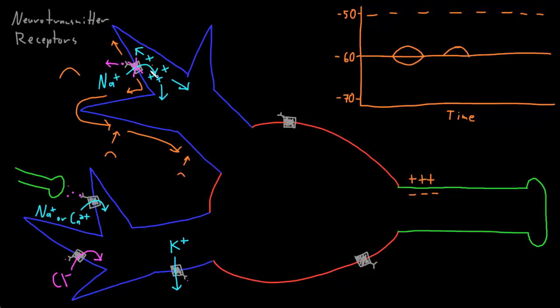This is how graded potentials degrade with time and with distance, so that their effects are only additive if they occur close enough together in time and in space.